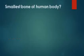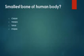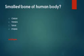What is the smallest bone of the human body? Options are carpal, patellar, tarsal, or stapes. The answer is stapes. Stapes is the bone present in the ear.